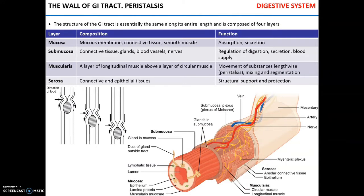The entire alimentary canal or gastrointestinal tract has a very similar structure along its entire length, with very minor exceptions. The wall of the alimentary tract consists of four layers: mucosa, submucosa, muscularis, and serosa.